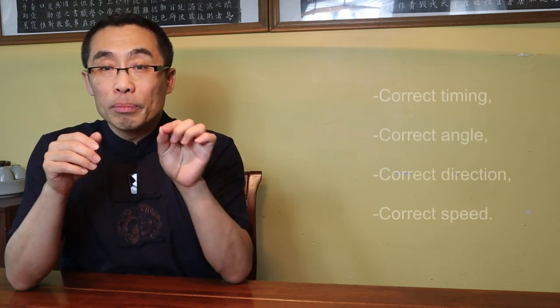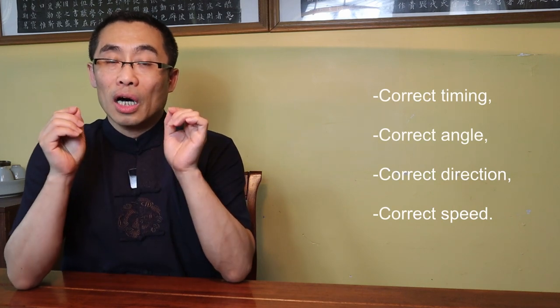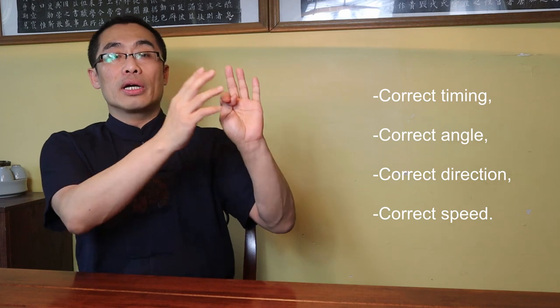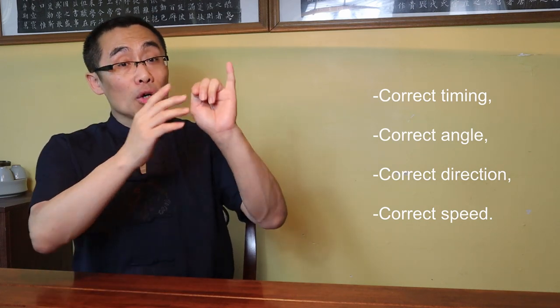Principle 3: Front foot steps down, then front knee pushes forward. When the front foot steps and slides, the front thigh extends forward with strength in the direction of the front foot. The movement of the front knee is initiated by the front thigh — this is a key point which I mentioned in the previous topic. Furthermore, the knee should not push forward too early or else it won't be considered Tang Ni Bu. Correct Tang Ni Bu practice involves a combination of correct timing, correct angle, correct direction, and correct speed.